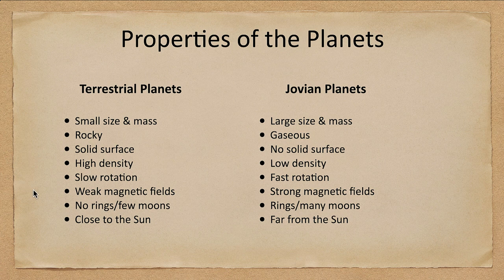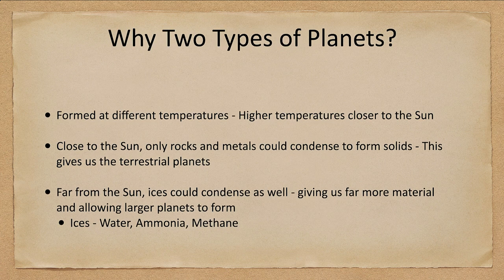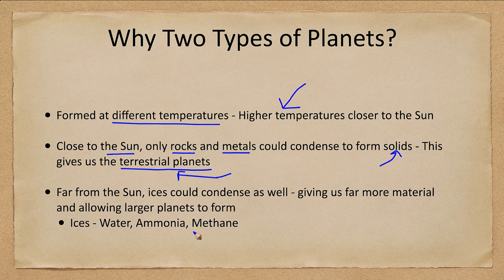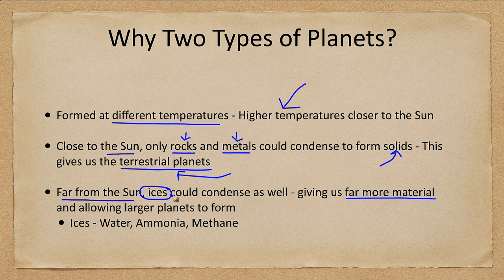Now we want to think about why we might have two types of planets — we will come back and look at this in more detail later on. But really the key is that they formed at different temperatures. In the solar nebula, when the solar system was forming, we had higher temperatures close to the sun. Close to the sun the only things that could condense were rocky and metallic materials — the only things that could form solids that became the building blocks of the terrestrial planets. Icy materials were unable to condense until you got far enough out in the solar system. Far from the sun you can condense ices as well, giving far more material to build from. In the outer solar system you not only had the rock and metal from the inner solar system but also the icy material, and that allowed for larger planets to form.